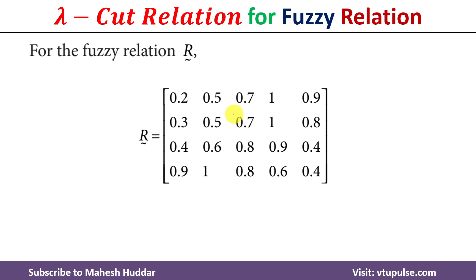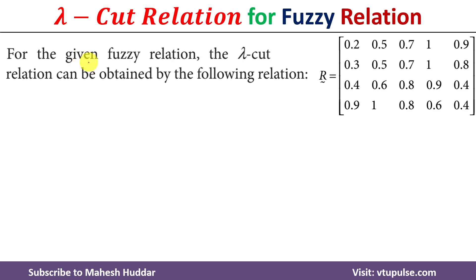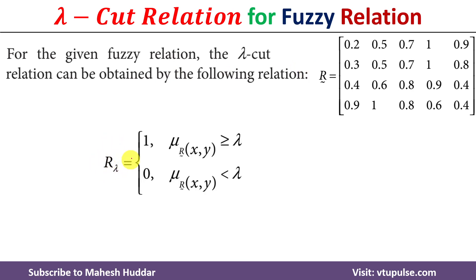We need to find the lambda cut relation for different values of lambda: 0.2 and 0.7. The lambda cut relation is obtained as follows: it contains 1 if the membership value at (x, y) in the fuzzy relation is greater than or equal to lambda, otherwise it is 0.